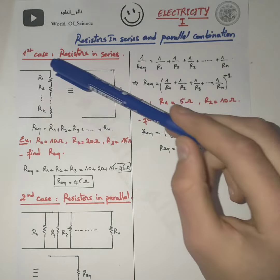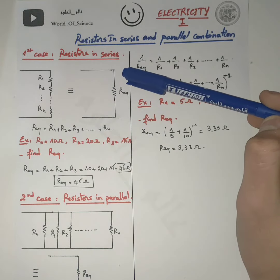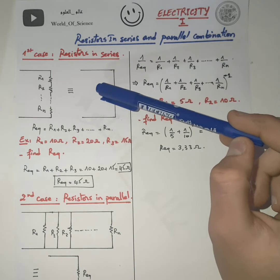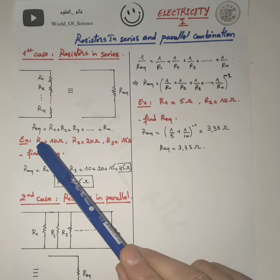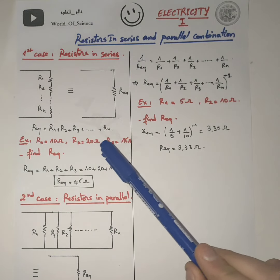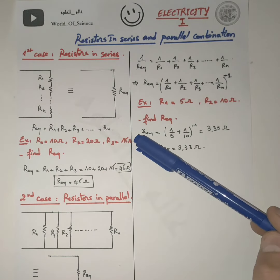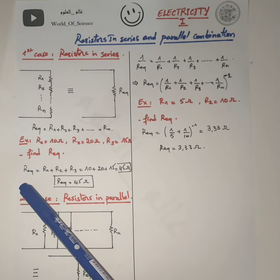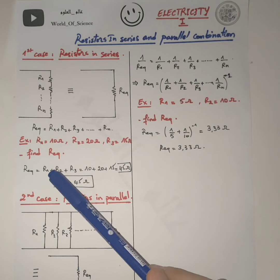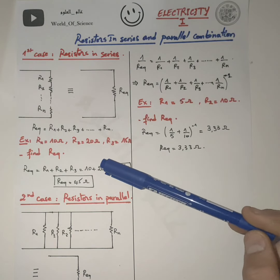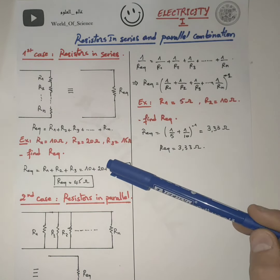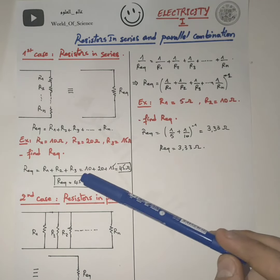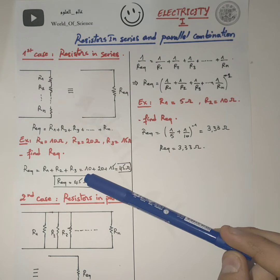We can simplify this circuit to an equivalent one. Let's take an example. If we have R1 equal 10 ohm, R2 equal 20 ohm, and R3 equal 15 ohm, find R equivalent. R equivalent equals R1 plus R2 plus R3, which is 10 plus 20 plus 15. It becomes 45, so R equivalent equals 45 ohm.